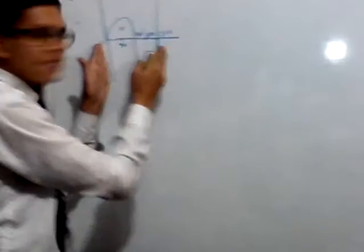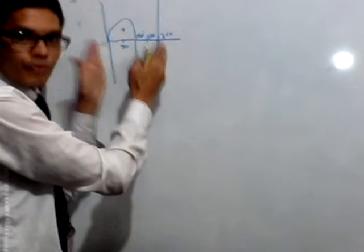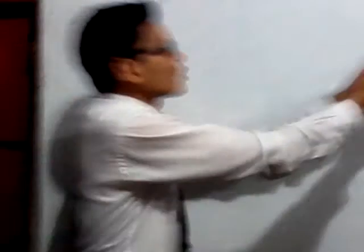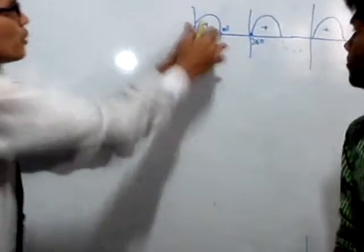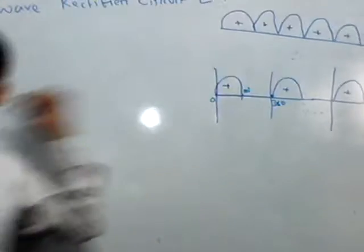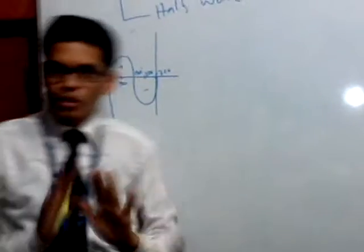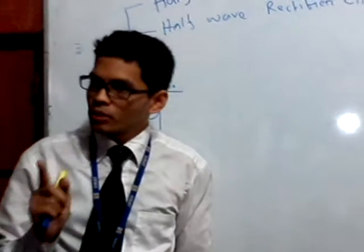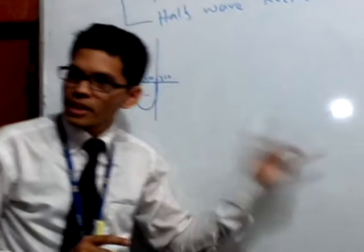For each cycle, only the positive portion will be appearing at the output, and the negative portion will be absent. Do you have any question about why it is called half-wave rectification?